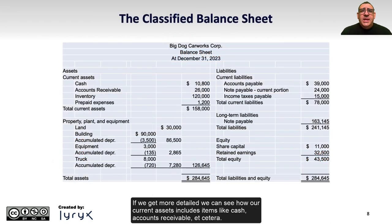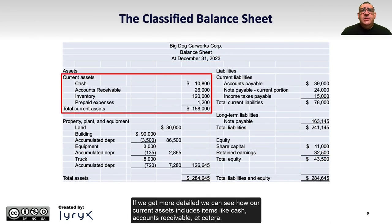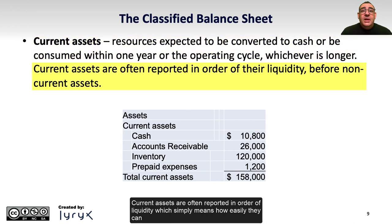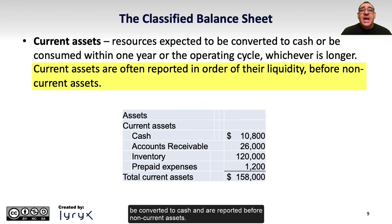If we get more detailed, we can see how our current assets includes items like cash, accounts receivable, etc. Current assets are those that are expected to be converted into cash or consumed within one year or the operating cycle, whichever is longer. Current assets are often reported in order of liquidity, which simply means how easily they can be converted to cash, and are reported before non-current assets.